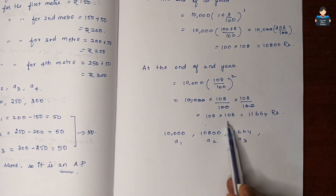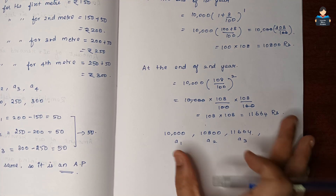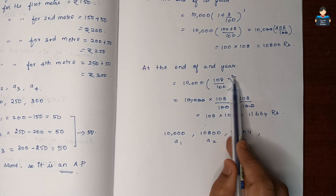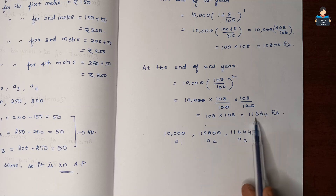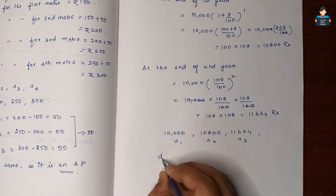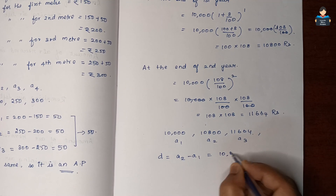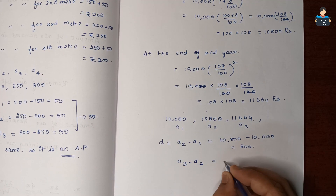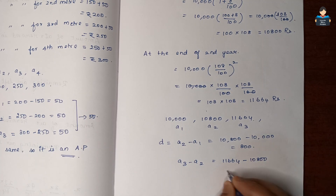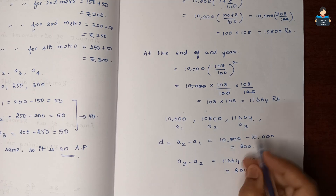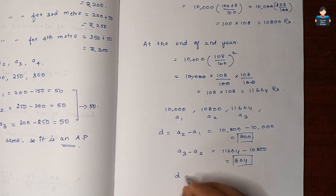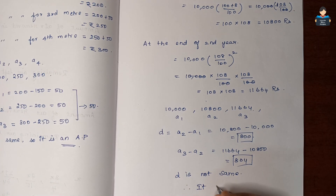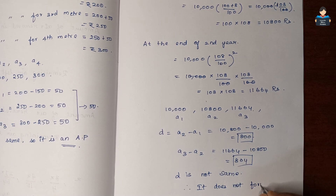Now checking the common difference: A2 minus A1 is 11,664 minus 10,800 which is 864. Wait — A2 minus A1 is 10,800 minus 10,000 which is 800, and A3 minus A2 is 11,664 minus 10,800 which is 864. Since D is not the same, therefore it does not form an AP.